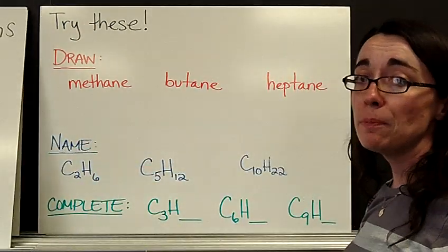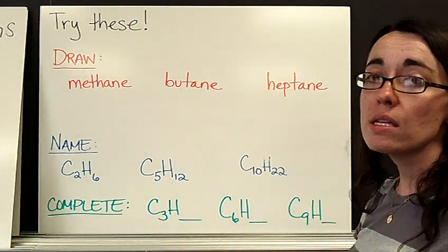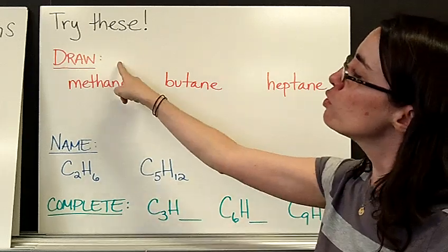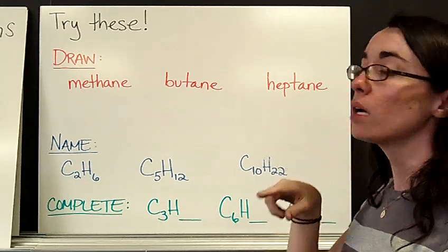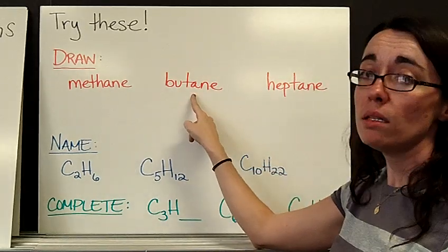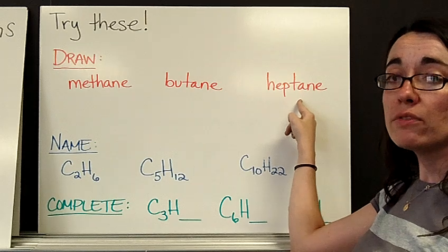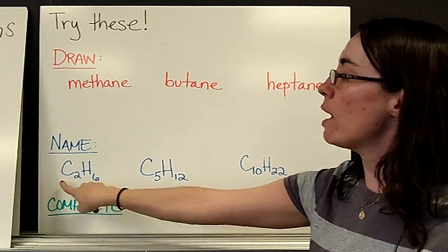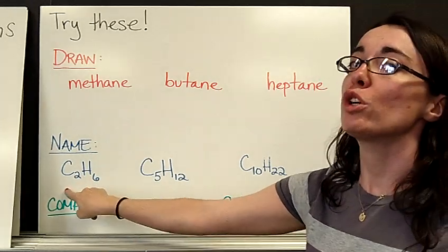Okay, you're going to need a Table P and a piece of paper. I'd like you to try all of these and bring them with you to class on Monday. So you are going to draw structures for me—that is the carbons, the hydrogens, and all of the bonds—for methane, butane, and heptane.